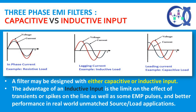Capacitive vs. Inductive Input: A filter may be designed with either capacitive or inductive input. The advantage of an inductive input is the limit on the effect of transients or spikes on the line, as well as some EMP pulses, and better performance in real-world unmatched source and load applications. However, inductive input filters tend to have a higher passband impedance and tend to be more expensive than capacitive input filters.